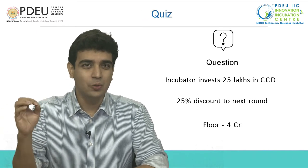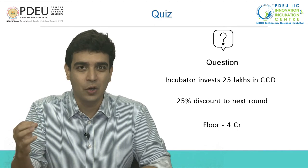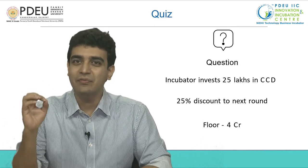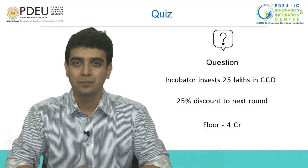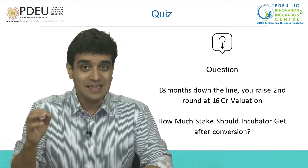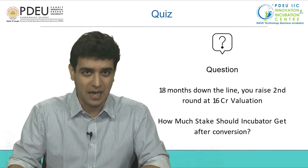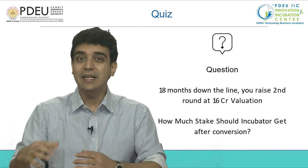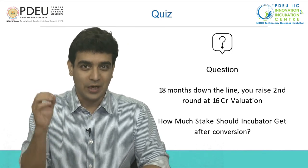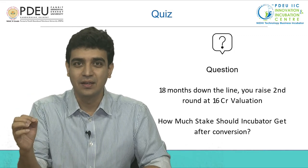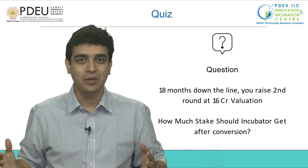Now let me ask you a quick question. Let us say PDU IIC invests 25 lakhs in your venture in the form of CCD with a 25% discount to the next round of funding, and we have set a floor valuation of 4 CR. 18 months later, you raise a 2nd round of capital from some other investor at a valuation of 16 CR. How much stake will PDU IIC get on conversion of CCD into equity? You can put your answers in the comments section. Stay tuned for more videos on understanding various concepts of funding and venture building. Thank you.